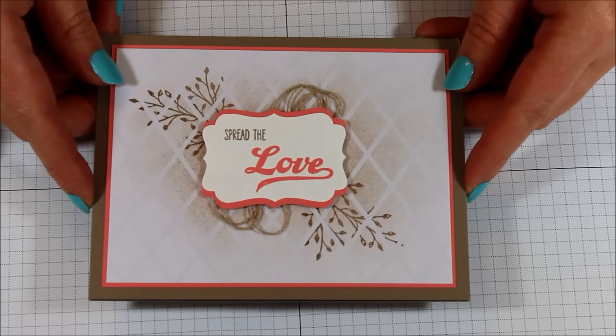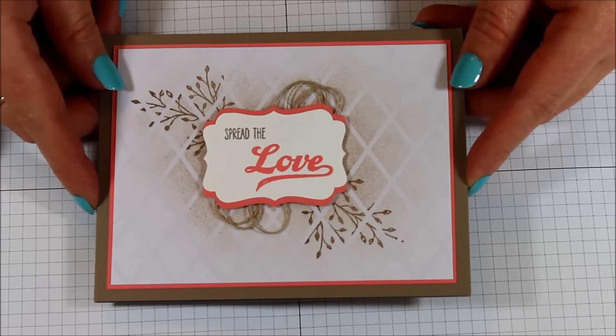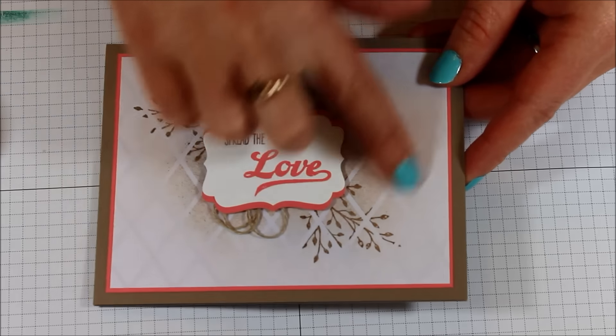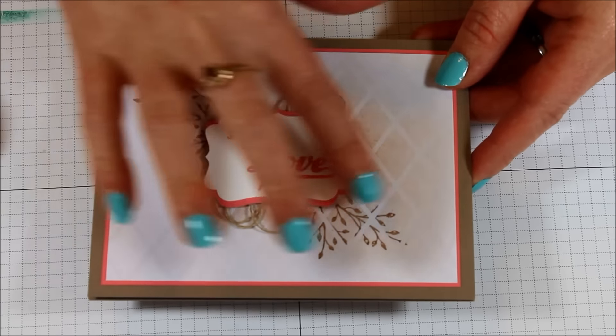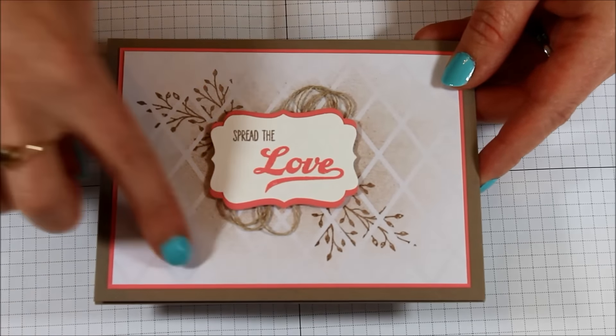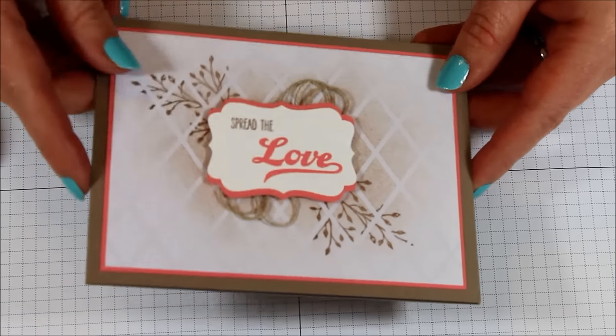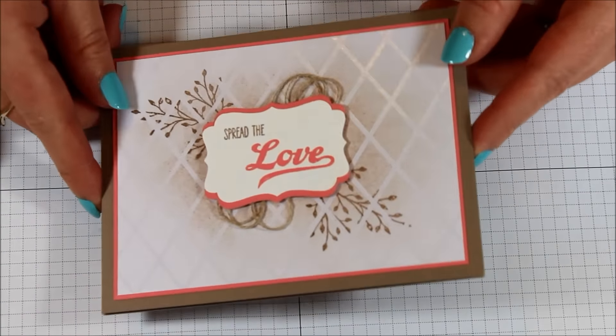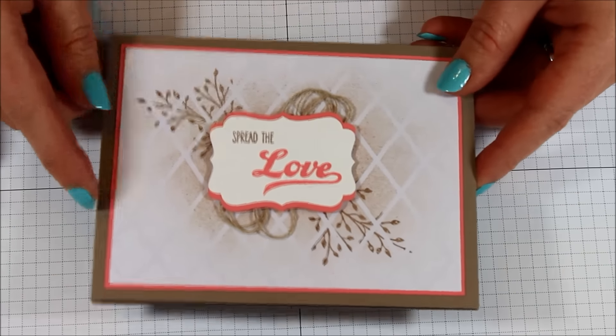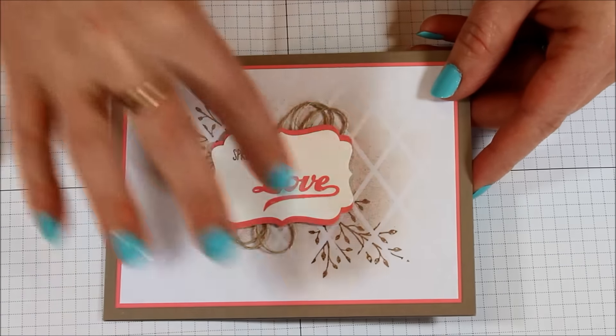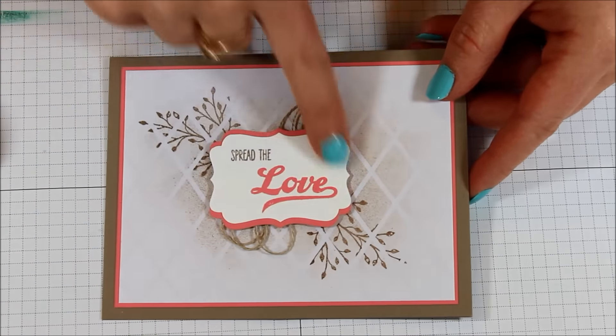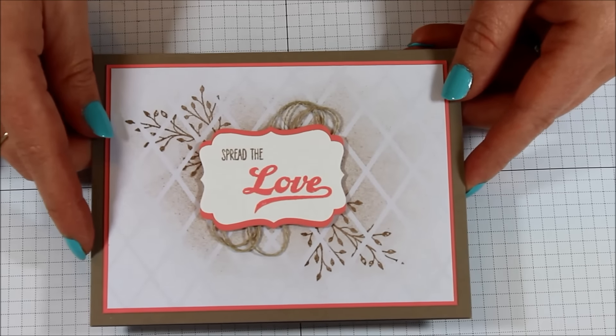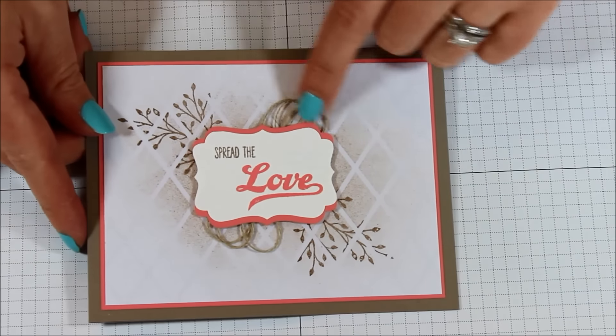I love the color combination of Tip Top Taupe and Flirty Flamingo. I love that rustic, slightly brown background, but then I left some of it staying white. You can see those nice little shiny embossed lines across the back there and then the little wispy twig in the background and the greeting. The greeting is just so amazing. Spread the love with a little bit of linen thread.